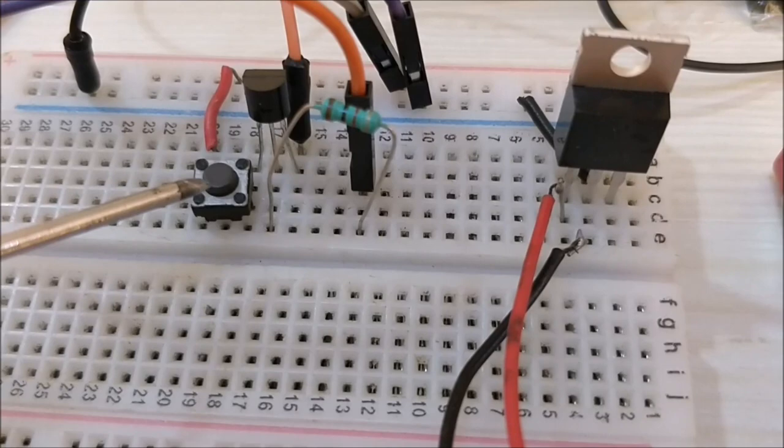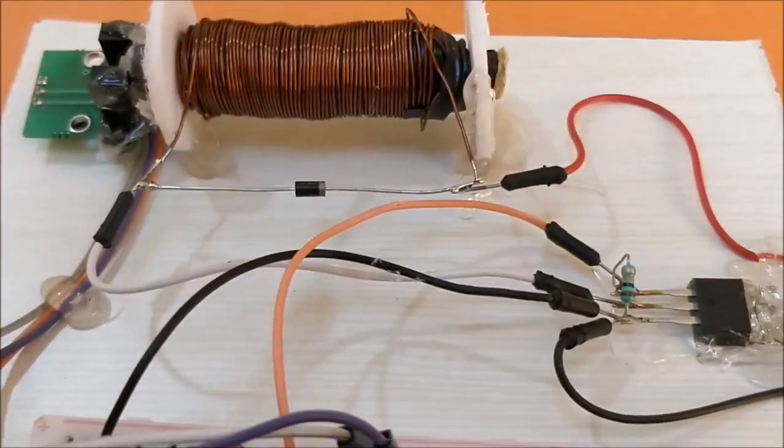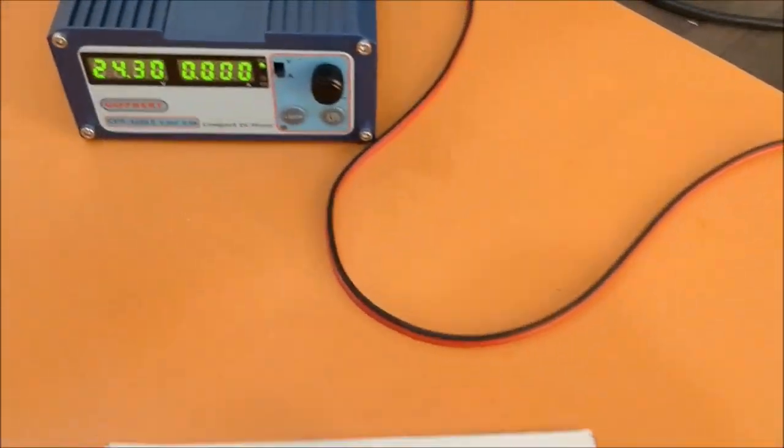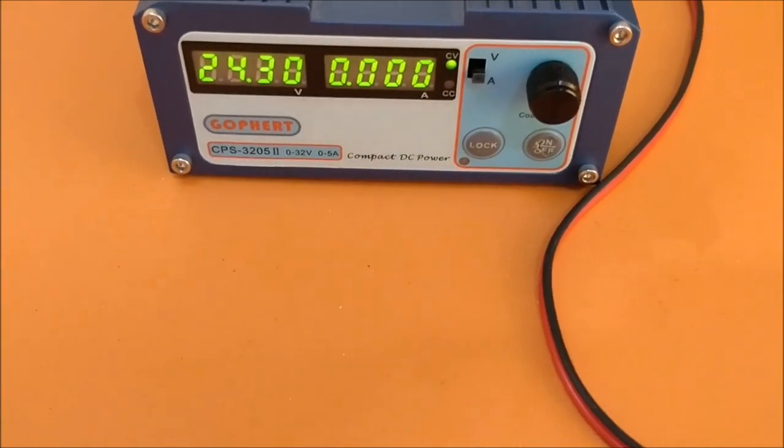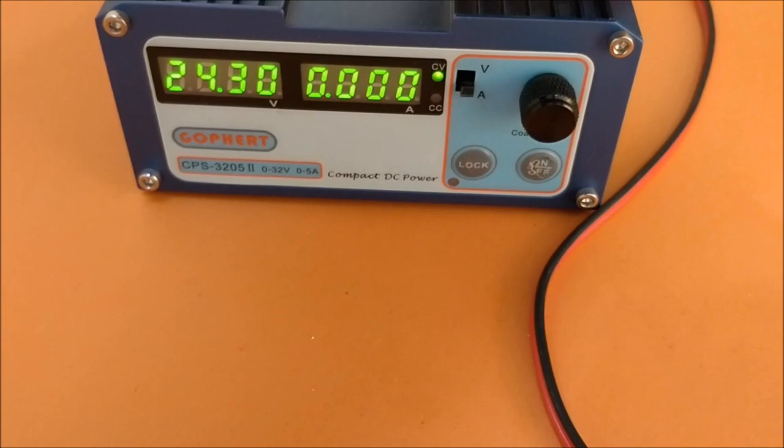And then we have a switch over here which will provide power to this coil. So this coil will be energized by the RPS over here which is set for 24V, and the maximum current that this RPS can deliver is 5A.